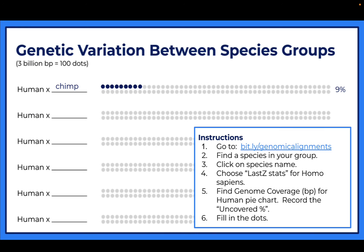You're going to go to the website bit.ly/genomic-alignments to find a species in your group. If I'm looking for birds, I might look up a kakapo - a flightless nocturnal parrot found in New Zealand. Click on the name, choose 'last Z stats' for Homo sapiens, find the genome coverage pie chart, and record the uncovered percentage, which represents the variation.